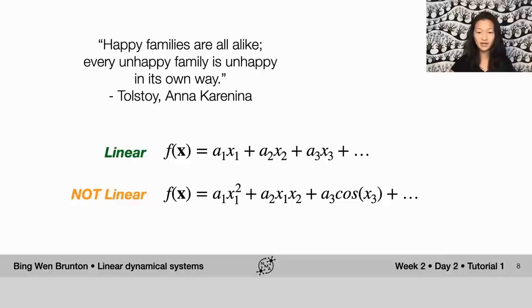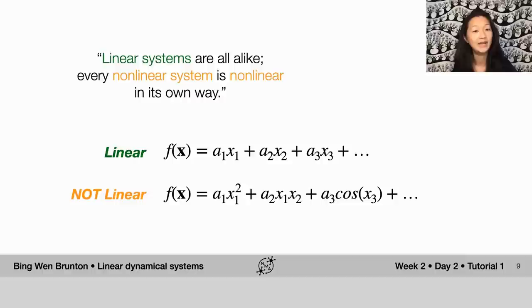And so I like to introduce this topic by reminding people of this quote from Tolstoy, which is the first line of his novel Anna Karenina: happy families are all alike and every unhappy family is unhappy in its own way. In the context of dynamical systems, the version goes: linear systems are all alike and every non-linear system is non-linear in its own way.